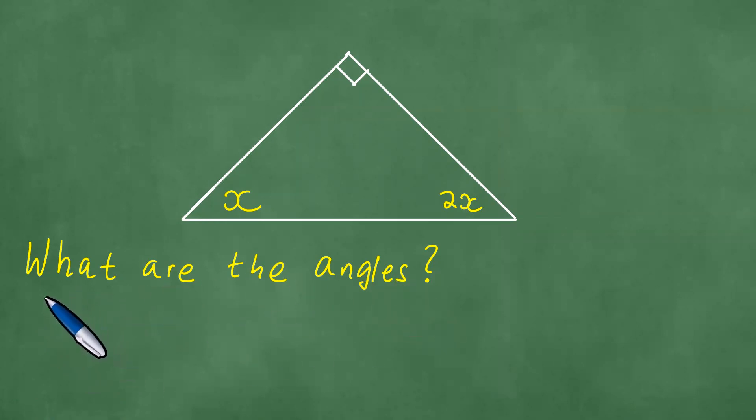To solve this problem, we begin as follows. We take x plus 2x plus 90 degrees and this sum is 180 degrees.